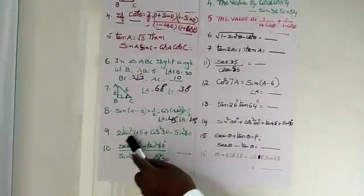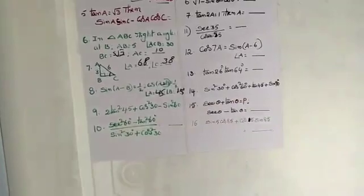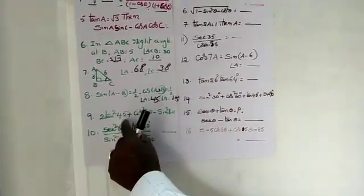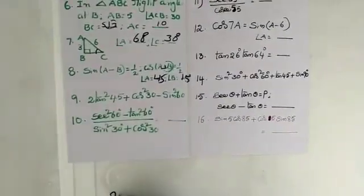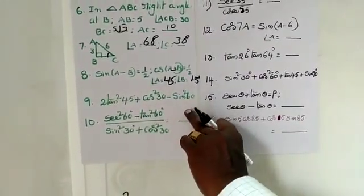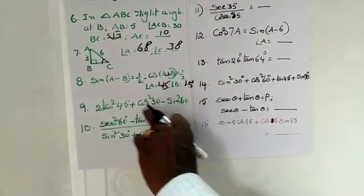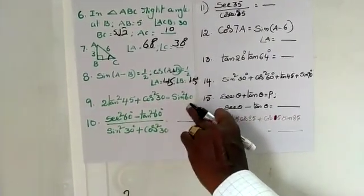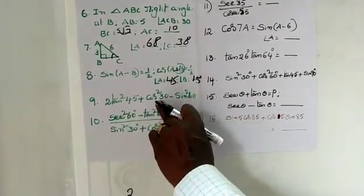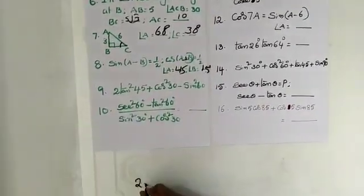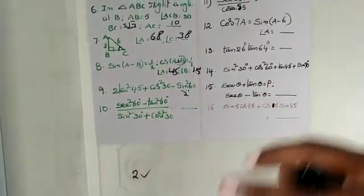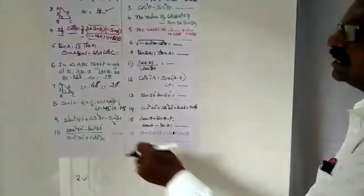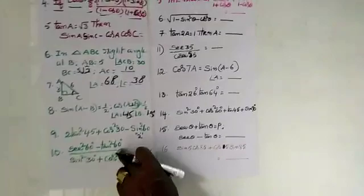Next, ninth bit. Direct answer choices - now we have to say: 1 is 1, 2 is 1, 2. Within seconds you will get the answer. If you don't get one for one, even for one. Again students, this one is very important.